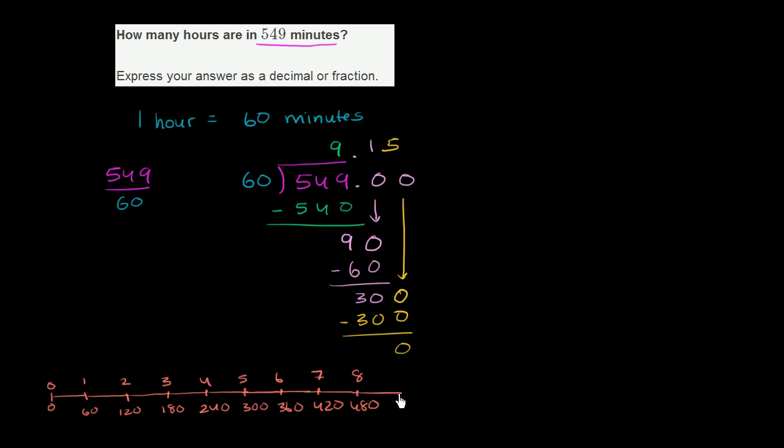And then you have 9 hours, notice I'm just adding 60 minutes every time. 9 hours is 540 minutes. Or another way you could think about it is, if each hour is 60, 9 times 60 is 540. And we don't want to go to just 540, we have another 9 left.